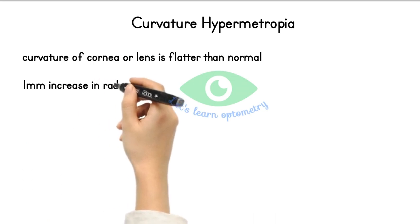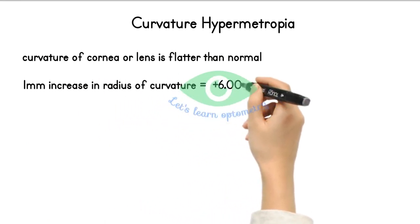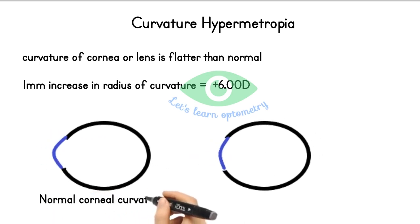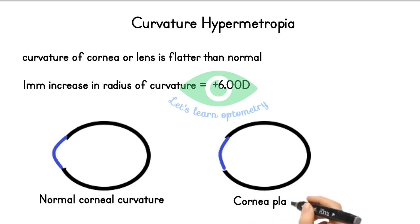An increase of 1 mm in radius of curvature produces plus 6 diopters of hypermetropia. Keep in mind that increased radius of curvature is synonymous with flattening. For example, compared to normal corneal radius of 7.8 mm, a patient with 8.8 mm will have plus 6 diopters. Example: cornea plana.